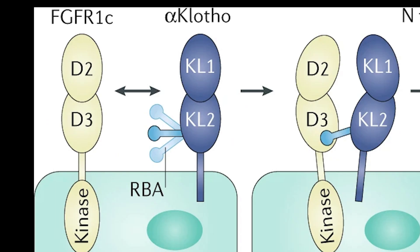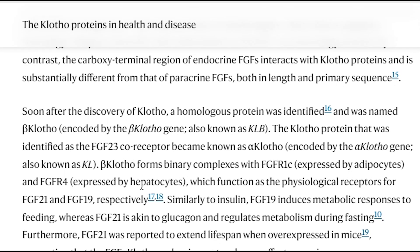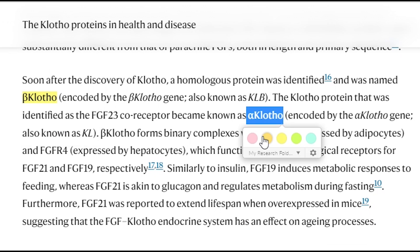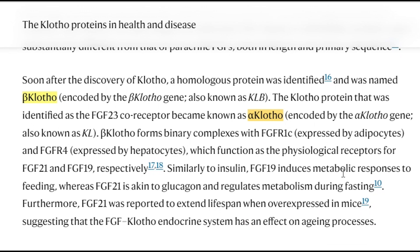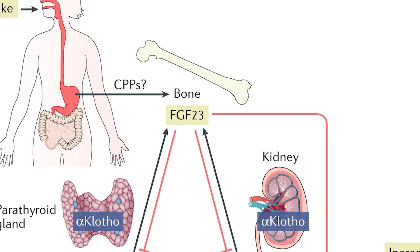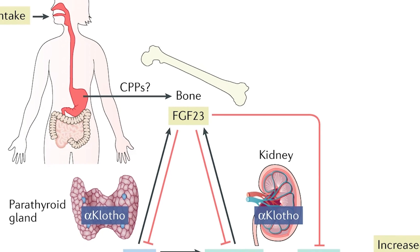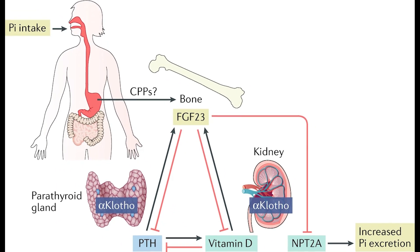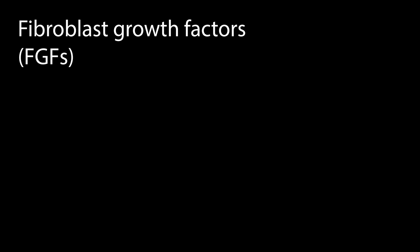It turns out there is more than one gene for clotho proteins — there are in fact two clotho proteins, alpha and beta. The proteins are not expressed in all cell types and are primarily expressed in the kidney, a region of the brain, and a bit in adipose tissue. They act to promote high affinity binding of specific fibroblast growth factors to their receptors.